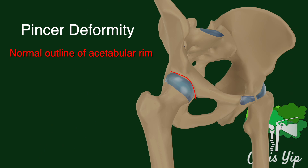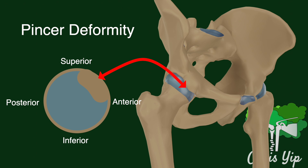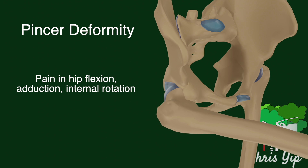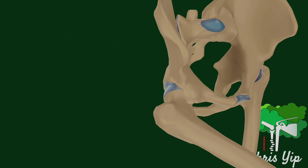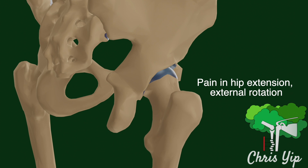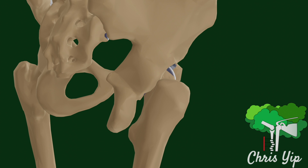A pincer deformity is due to a focal or global acetabular overcoverage, presenting in the form of an overhang from the normal rim of the acetabulum. It is most common at the anterior superior quadrant, causing pain when the hip is flexed, adducted, and internally rotated, creating contact between the overhang and the femoral neck. If pain is experienced with hip extension and external rotation, it may indicate a posterior impingement instead.